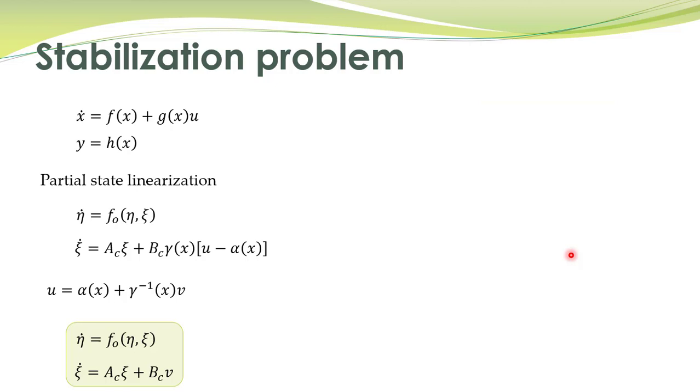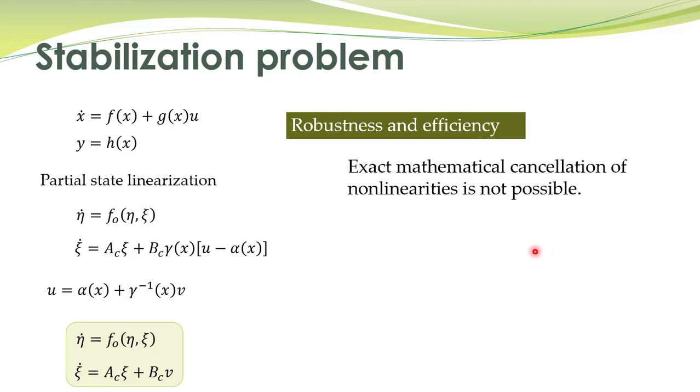Zero dynamics are obtained from the internal dynamics by substituting xi equal to zero. If we substitute xi = 0 we get the zero dynamics, and if the origin of the zero dynamics is asymptotically stable, then the origin of the overall closed-loop system will also be asymptotically stable.